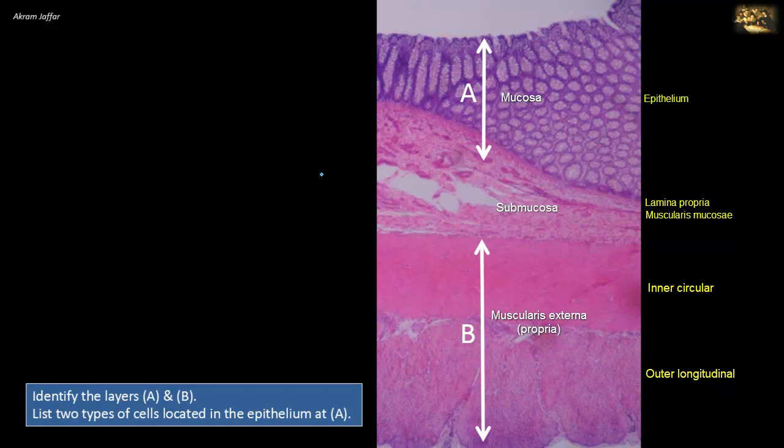By examining which layer is cut longitudinally or transversely, we can determine the orientation of the section. Here the inner circular layer is sectioned longitudinally, indicating this is a cross-section of the gut tube cut perpendicular to its length, which is why the outer longitudinal fibers are cut transversely. Regarding the epithelium cell types: it is simple columnar epithelium with multiple mucus-secreting goblet cells. There are no villi, so this is not small intestine — small intestine sections are characterized by villi. This section shows crypts.